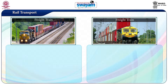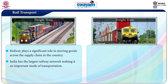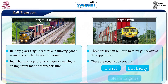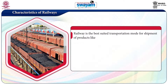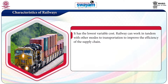Let us now look into rail transport. Railways plays a significant role in moving goods across the supply chain in the country. Our country has the largest railway network, making it an important mode of transportation. Freight trains are used in railways to move goods across the supply chain. The freight trains are usually powered by diesel, electricity, and steam engines depending upon the rail network they operate. Railways is the best suited transportation mode for shipment of products like fertilizers, cement, food grains, and coal in large quantities from the production plant to warehouses. Railways has the lowest variable cost.